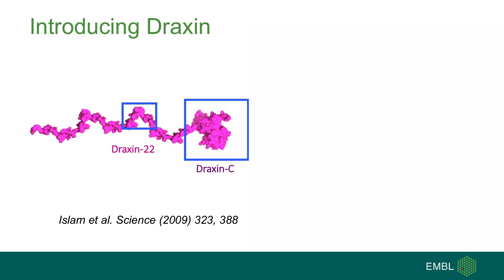Draxin is a guidance cue recently discovered by the Tanaka group from Kumamoto University, and it seems to also be involved in Netrin-DCC-mediated axon guidance. It interacts with the tip of the DCC receptor, further away from the cell membrane where Netrin binds.